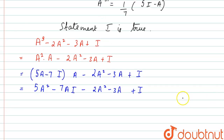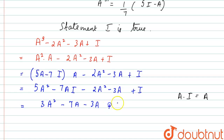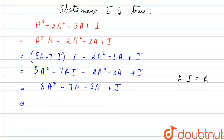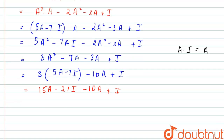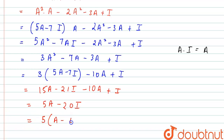Using the property that any matrix multiplied by the identity gives the matrix itself, we simplify: 5A² minus 2A² gives 3A², and minus 7A minus 3A gives minus 10A, plus I. Substituting A² equals 5A minus 7I again into 3A², we get 3(5A minus 7I) minus 10A plus I, which equals 15A minus 21I minus 10A plus I. This simplifies to 5A minus 20I.